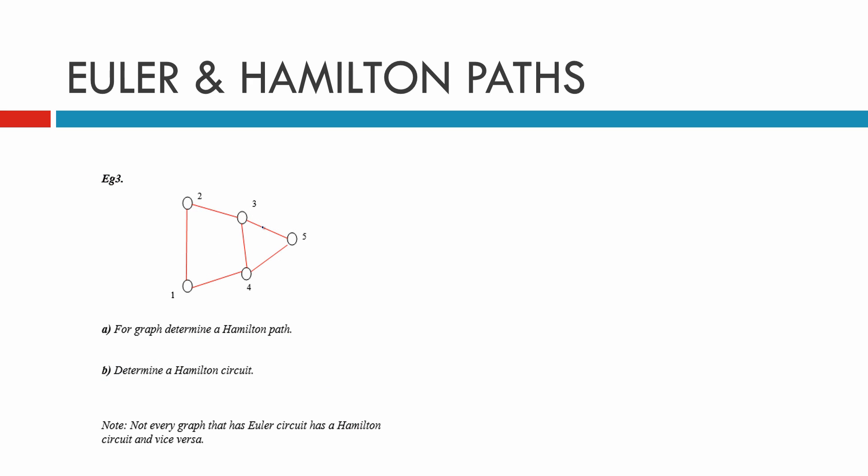Example three says: for this graph, determine a Hamilton path. We'll start at one and do the simplest path. Remember, we just have to cover all the vertices. Start at one, go to two, two to three, three to four, and four to five. There's an easy Hamilton path. Remember, we don't need to cover all the edges.